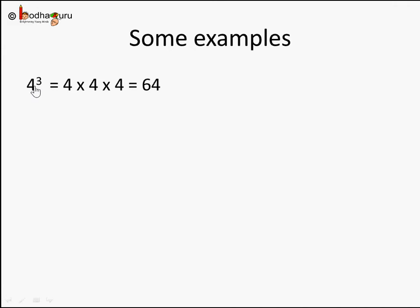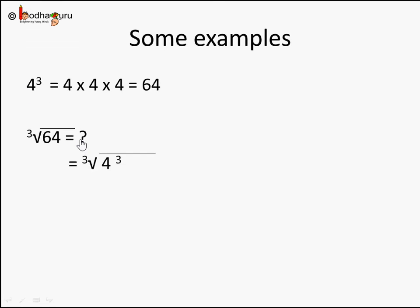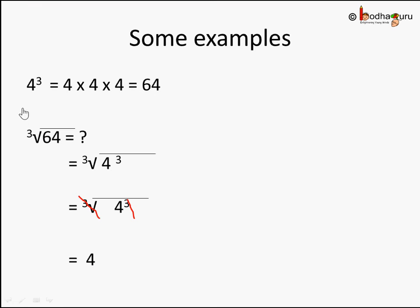Let's take some examples. 4 cubed is 4 × 4 × 4 — that is 4 multiplied by itself 3 times — which equals 64. So cube root of 64: since cube root is the inverse of cube, cube root of 64 = cube root of 4 cubed. We cancel the cube and the cube root, leaving 4. So cube root of 64 is 4, or cube of 4 is 64.